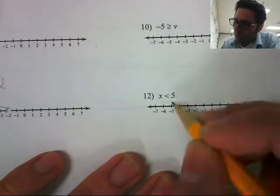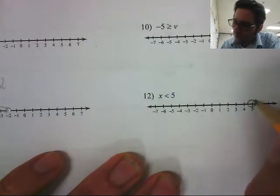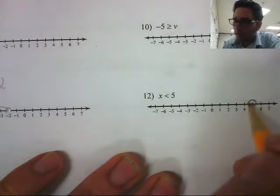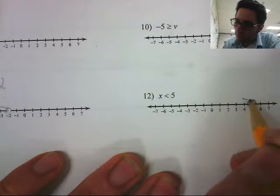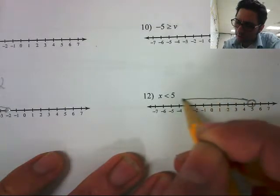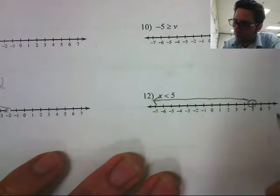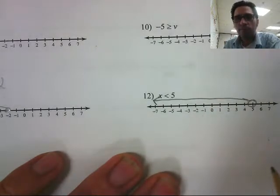So because it is a less than, it's going to be an open circle at 5. And less than means to the left, less is to the left, all numbers less than 5. That's how we graph this one.